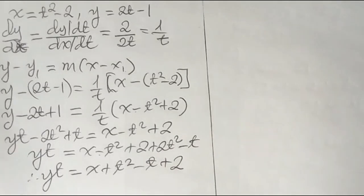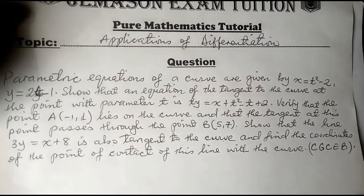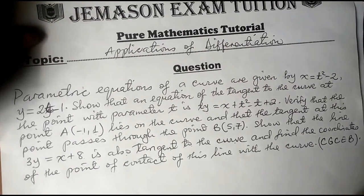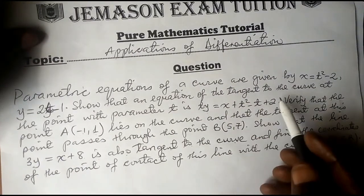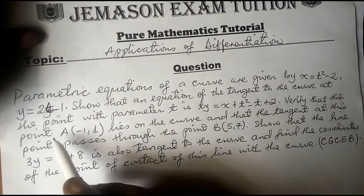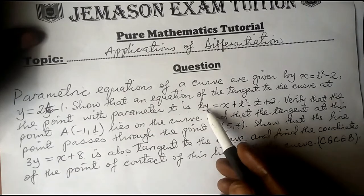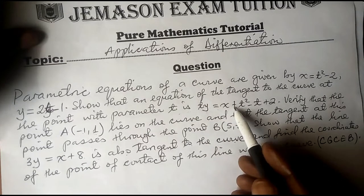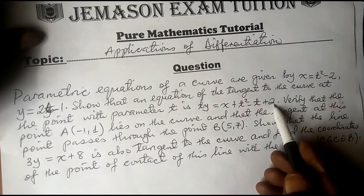This gives the general equation of the tangent. As required, we have shown that the tangent to the curve at the point with parameter t is ty equals x plus t squared minus t plus 2.